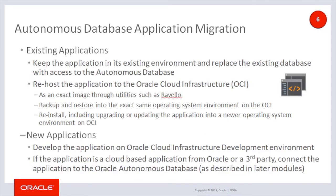Once a decision is made to move the database to Autonomous Database, the next step is to determine what to do with the application accessing the database. Just like rehosting the database to the cloud, rehosting the application to the cloud may have its own benefits. If the application using the Autonomous Database is an existing application, there are two preferred options for hosting the application. The first option is to keep the application in its existing location and replace the existing database with access to the Autonomous Database. The second option is to rehost the application to the Oracle Cloud Infrastructure. Rehosting the application may be straightforward, or may require substantial reconfiguration. Oracle provides tools such as Ravelo to assist in these migrations.